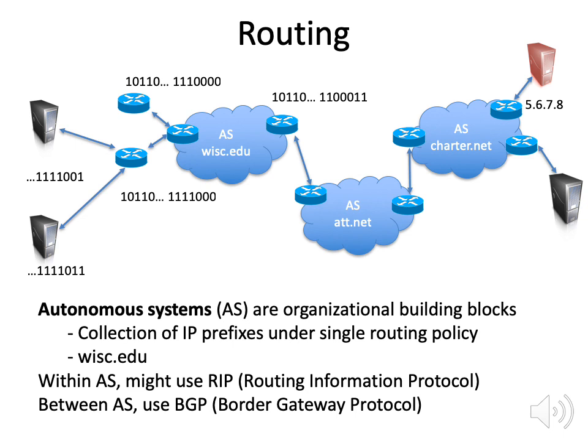The internet is organized as a set of autonomous systems. These are large networks run by organizations that then connect together. There is a network protocol within an organization — that might be RIP or OSPF — and within an AS, this is all managed by a single organization, so they have complete knowledge of the topology, the routers, where they connect, and all the addresses they're allowed to use. But between autonomous systems — between different companies that may not trust each other — they might have various reasons for routing in different directions.